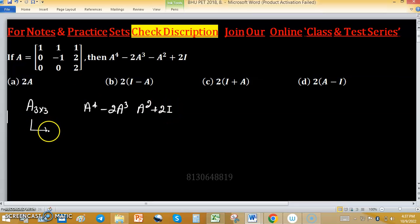Given matrix is upper triangular matrix, that's why eigenvalues are 1, minus 1, and 2.